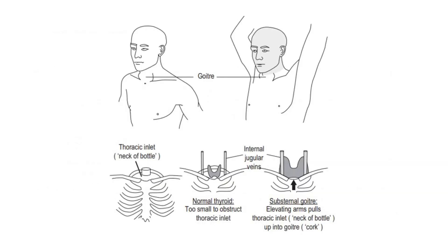This is a diagram to further illustrate the mechanism for the cork hypothesis. This is the thoracic inlet, which is the neck of the bottle. In a normal thyroid, the thyroid is too small to obstruct the thoracic inlet. But if there is a substernal goiter,